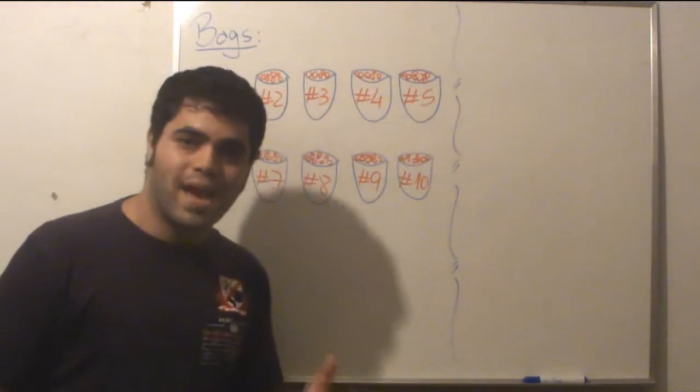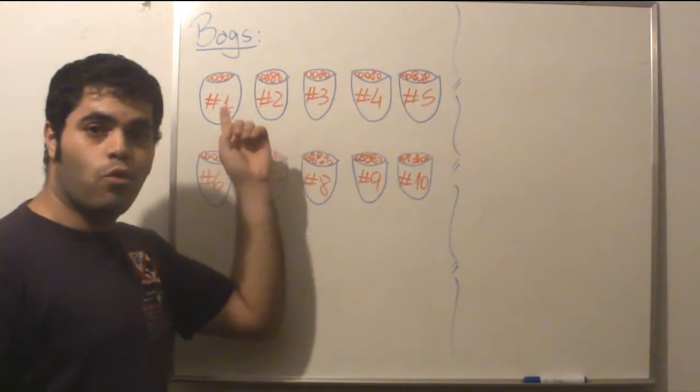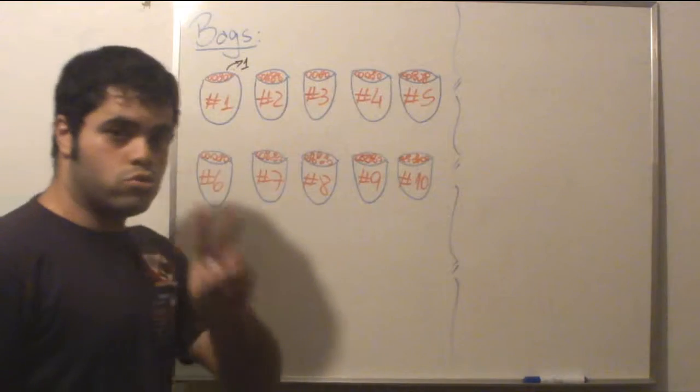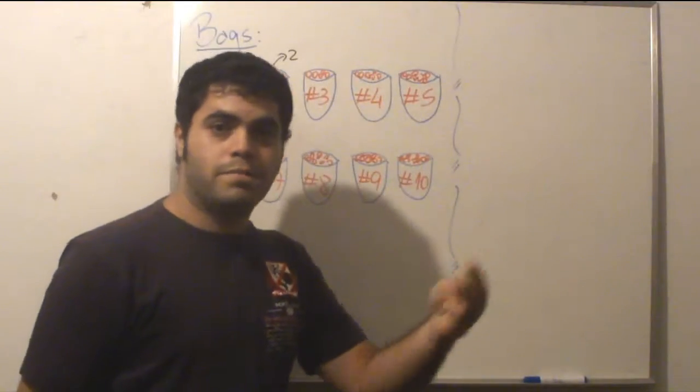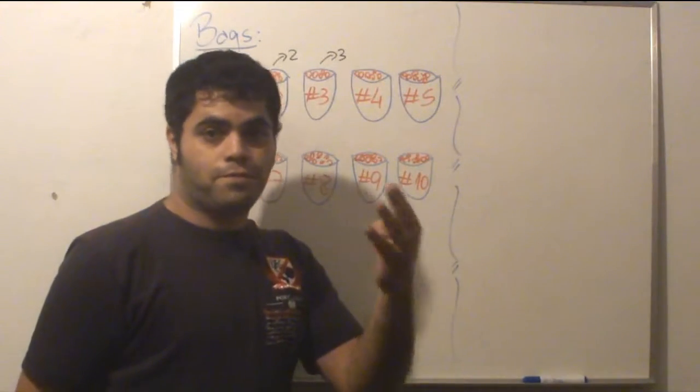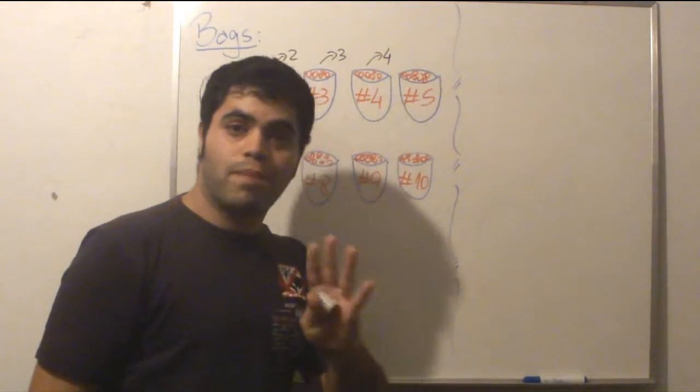I would put the bags in a straight line and then take one coin from the first bag, two coins from the second bag, three coins from the third bag, four coins from the fourth bag, and five coins from the fifth bag.